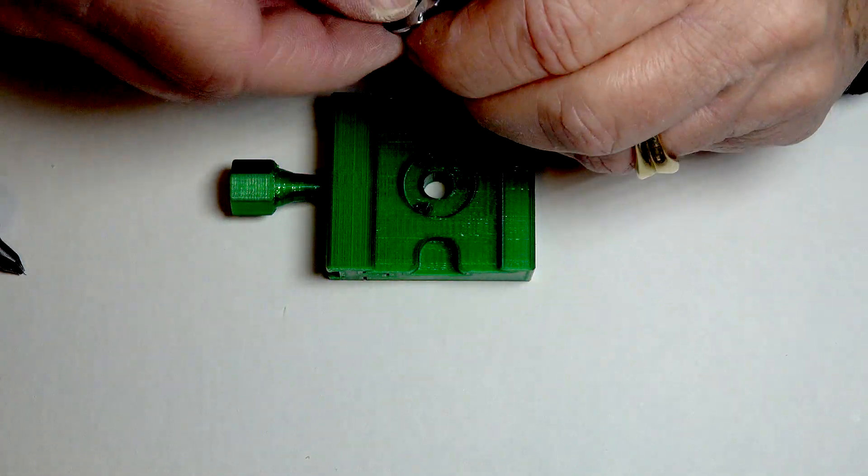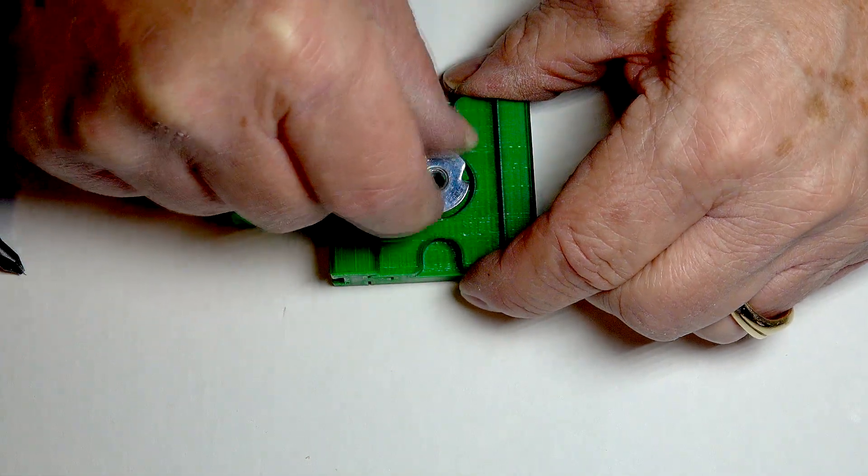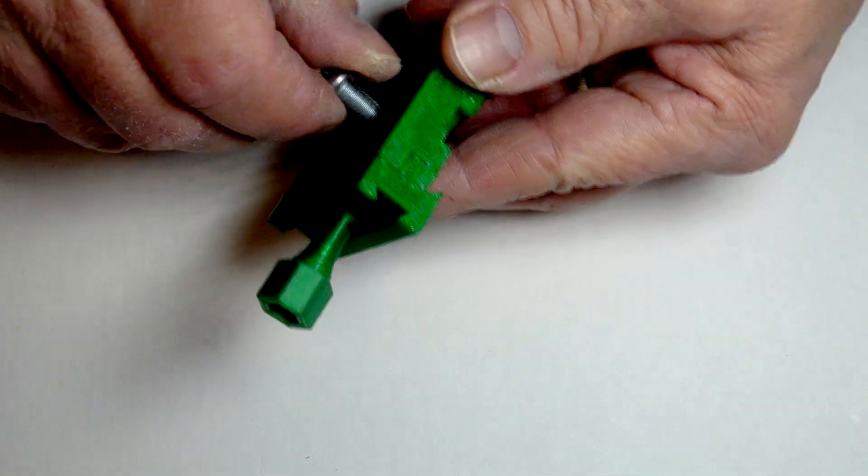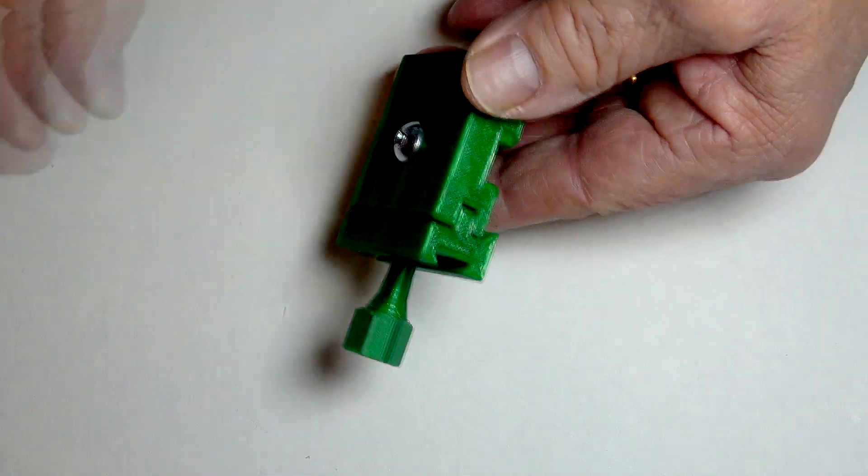Insert the t-nut into the hole, aligning the points with the three holes around the recess for the t-nut. Use a quarter-twenty machine screw to pull the t-nut tightly into the recess.